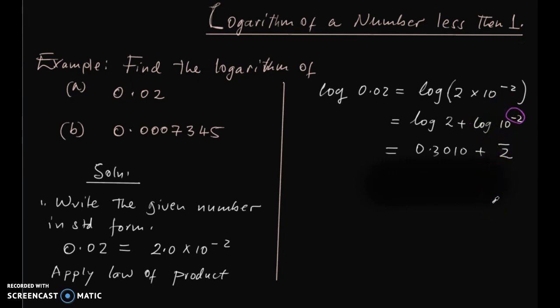From there we will have this is equal to bar 2 plus 0.3010, because logarithm of 2 is 0.3010 from your table. You now know how to read from the tables. Finally, this is going to be bar 2.3010. So this is our answer of reading the logarithm of this number from the table.